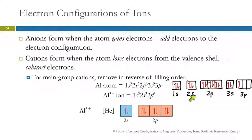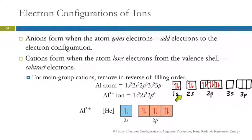This is a complete orbital diagram for aluminum. To make an aluminum 3+ ion, we're going to remove valence electrons in reverse order. The last one we put in is the first one we get rid of — the 3p electron — then the two 3s electrons. So the Al³⁺ configuration is 1s², 2s², 2p⁶.